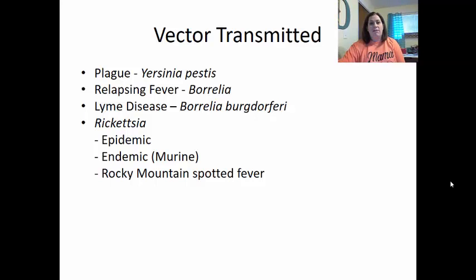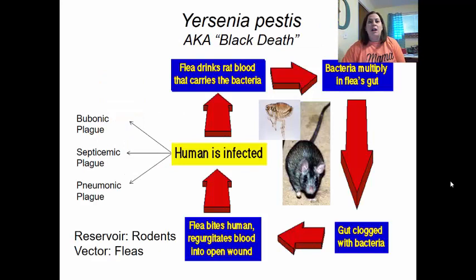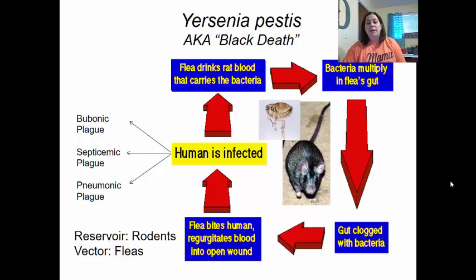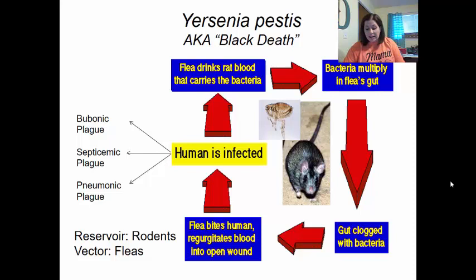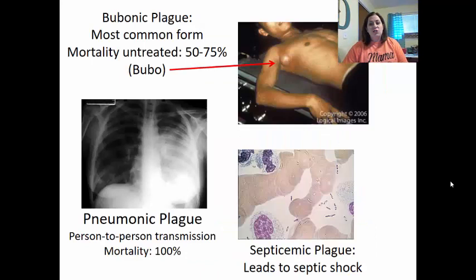Yersinia pestis, also known as the black death: the reservoir is rats, and the vector is the flea. The flea bites the rat and drinks its blood, carrying the bacteria. The bacteria multiply in the flea's gut, clogging it. The flea then bites humans and regurgitates some blood into the wound, causing infection. There are three types of plague: bubonic, septicemic, and pneumonic.